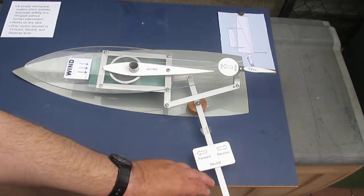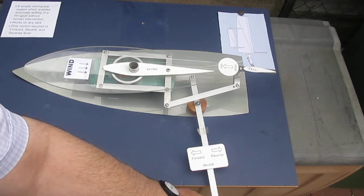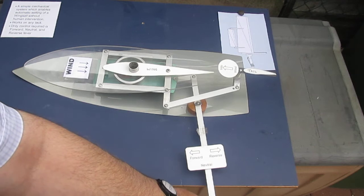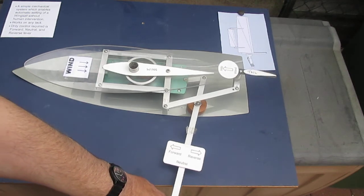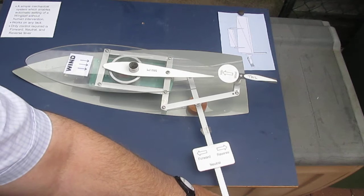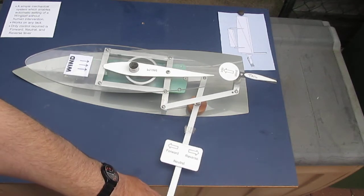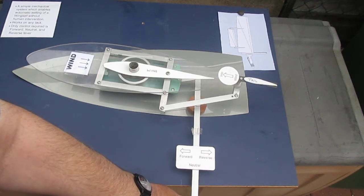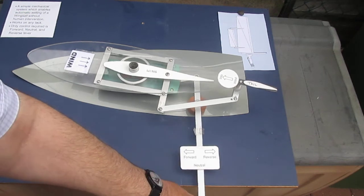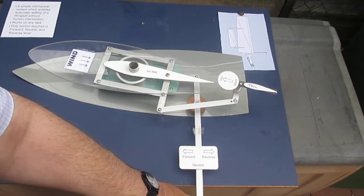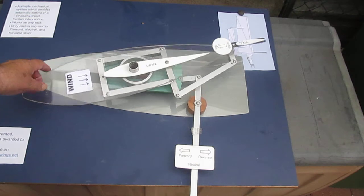So we have that control, but we have any amount in between: partial reverse, partial forward, or neutral. Full reverse, full forward, and neutral. And that's how the system works.